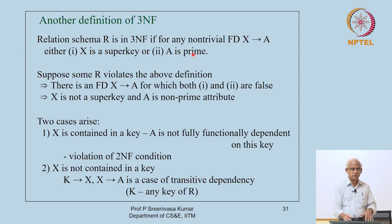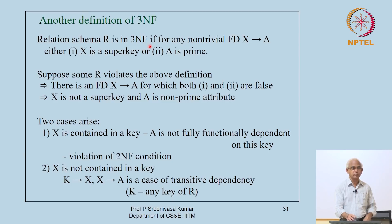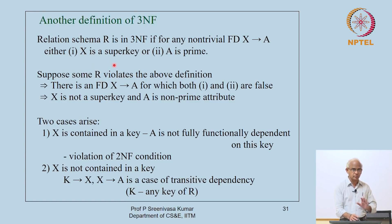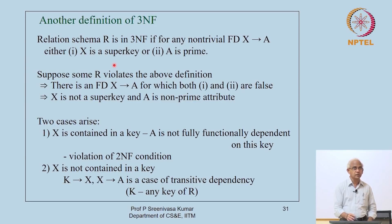We now move to a stricter form. Boyce-Codd normal form (BCNF) is obtained by simply dropping the concession for prime attributes from the 3NF alternate definition. A relation scheme R is in Boyce-Codd normal form if for every non-trivial functional dependency X determines A, X is a super key of R.